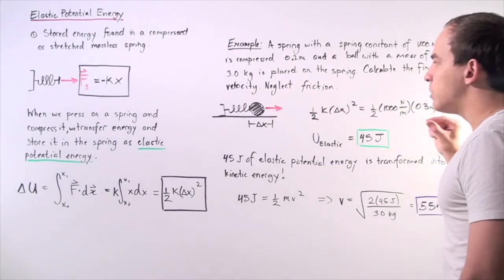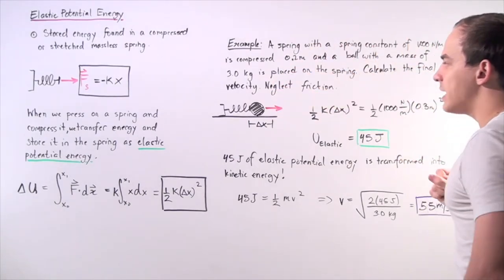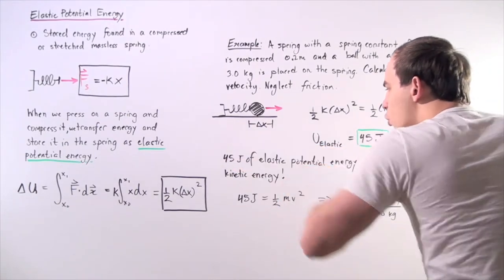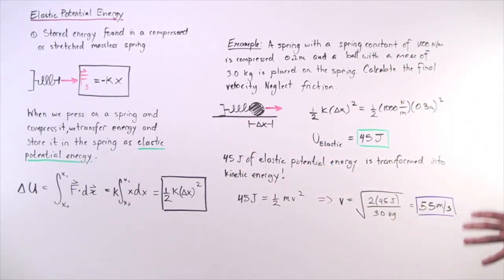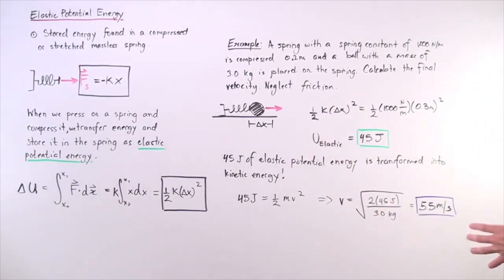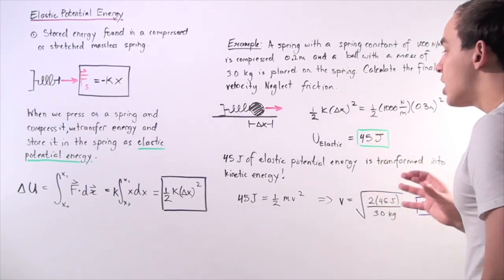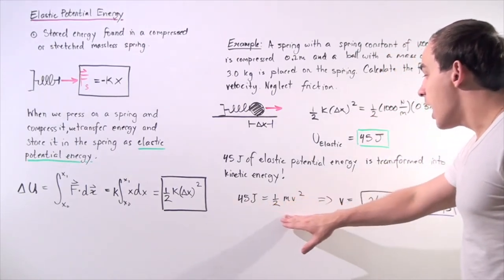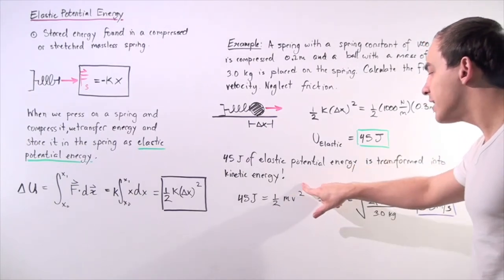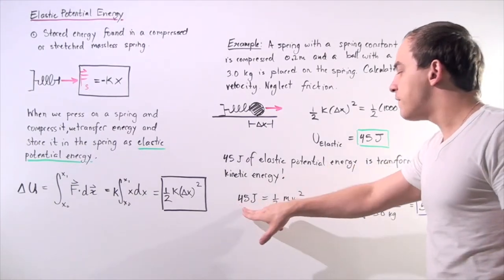Then we take the object, place it on the end of the spring, and let go. Now the 45 joules of elastic potential energy will be transformed into kinetic energy of the moving object. So what's the velocity of the object? Let's take our kinetic energy formula, ½mv², and equate that to 45 joules.